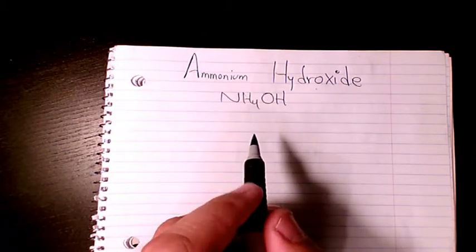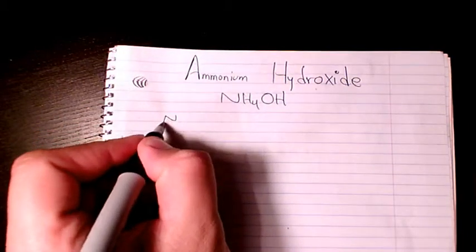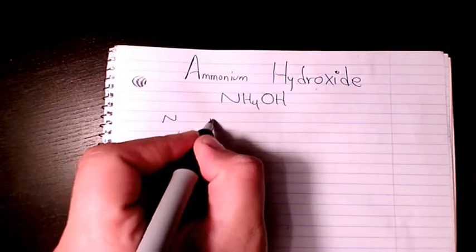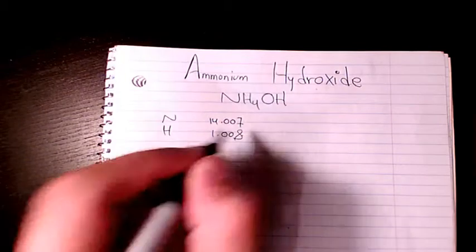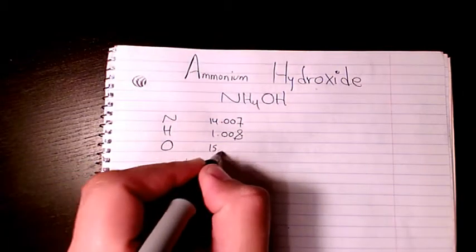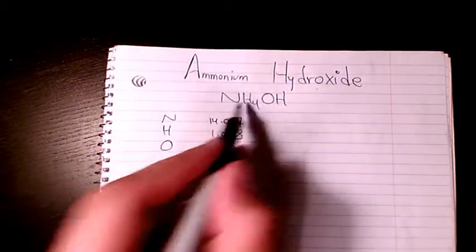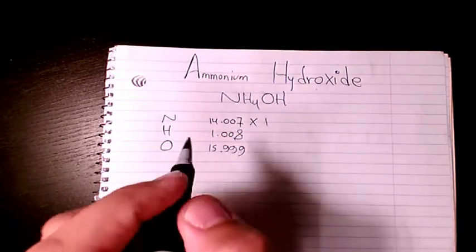For nitrogen we have 14.007. For hydrogen we have 1.008. Oxygen is 15.999. So how many nitrogen do we have? We have just one. How many hydrogen atoms do we have?